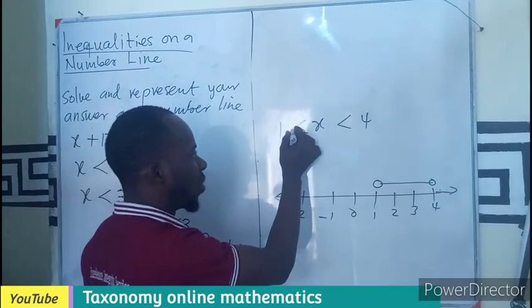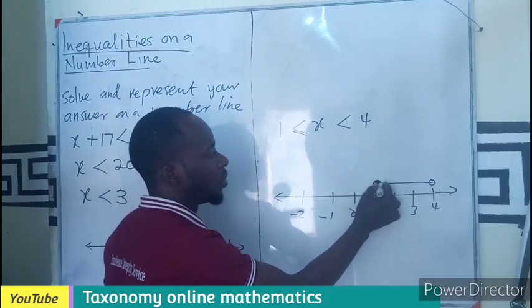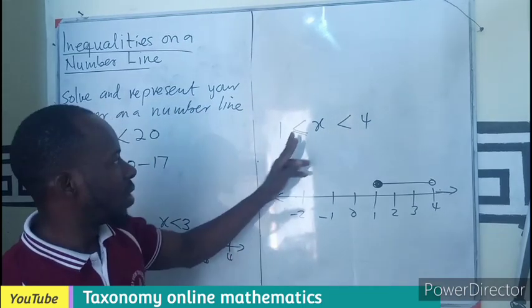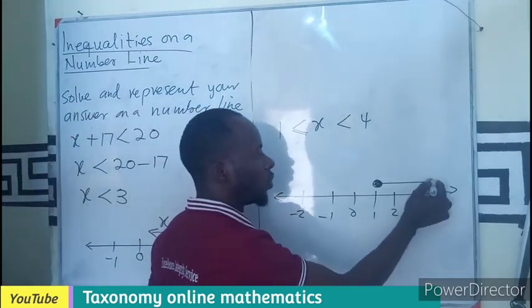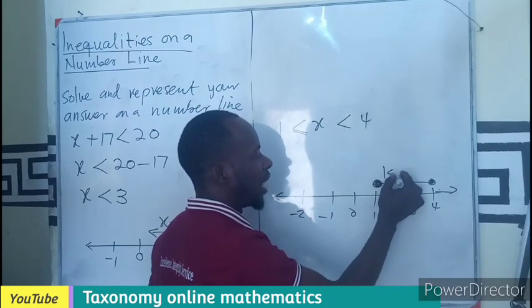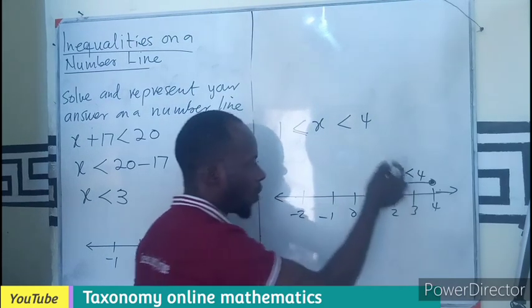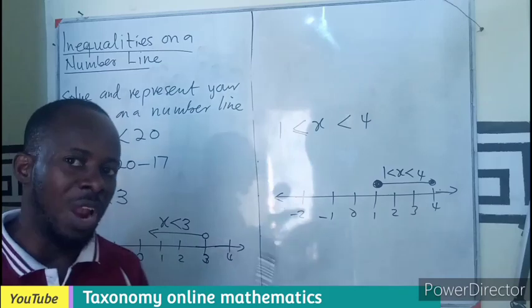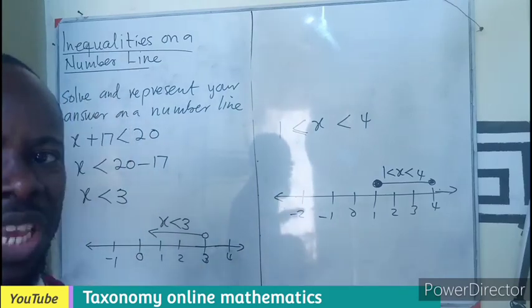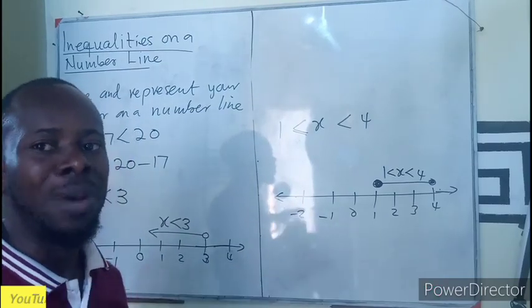So, in a sense, where there is a condition that you shade. If there is a condition for both, then it means you shade both sides. 1 less than x less than 4 will be placed on that. So, this is all about a representation of inequality on a number line.